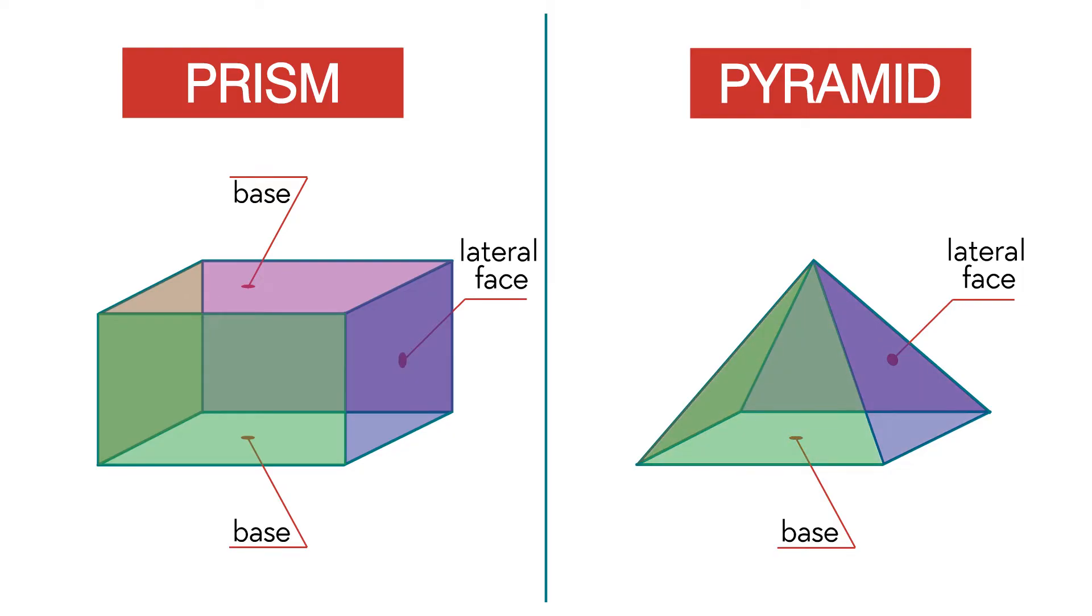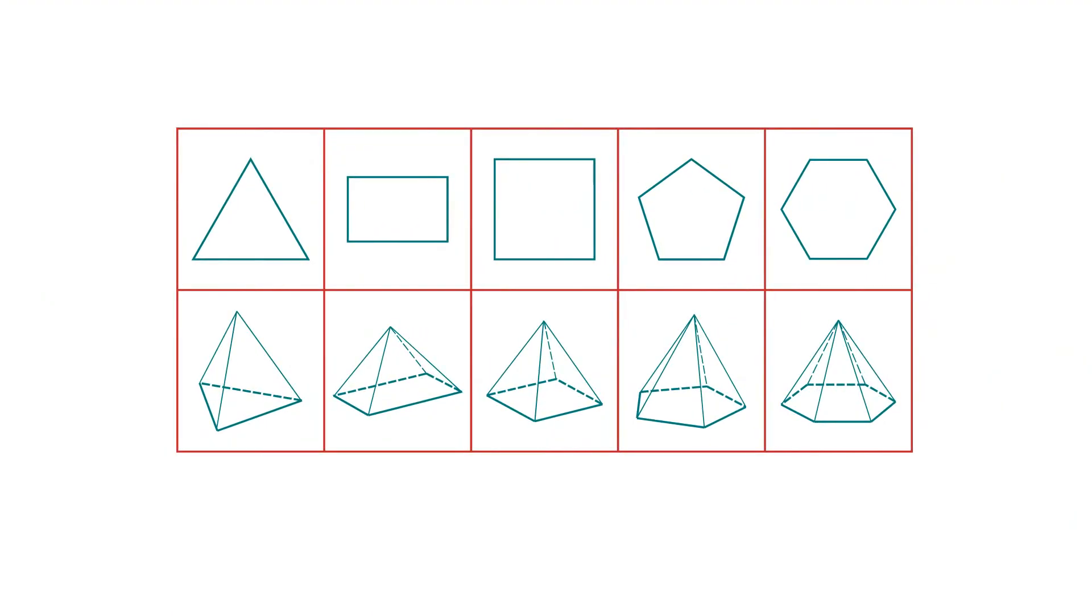A pyramid's base shape is used to name the solid figure. In a triangular pyramid, the base and faces are triangles. In a rectangular pyramid, the base is a rectangle.